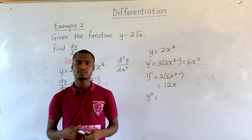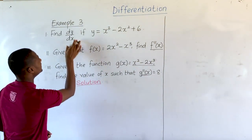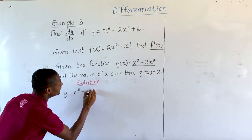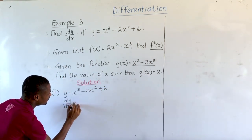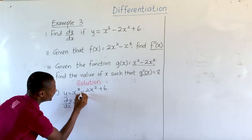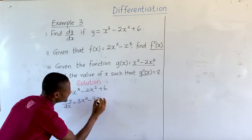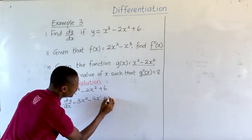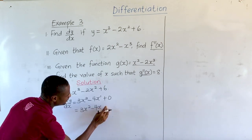Let's go through more questions. The first: find the first derivative of y equal to x cubed minus 2x squared plus 6. So dy/dx: multiplying by the power gives us 3x raised to the power 2, minus 2 times 2x raised to the power 1, plus 0 (since the derivative of a constant is 0). This gives us 3x squared minus 4x.